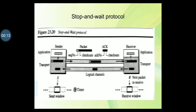We will discuss the Stop-and-Wait protocol. This is a connection-oriented protocol which uses both flow and error control. The sender and receiver both use a sliding window of size 1. The sender sends one packet at a time and waits for an acknowledgement before sending the next one. To detect corrupted packets, we add a checksum to each data packet.